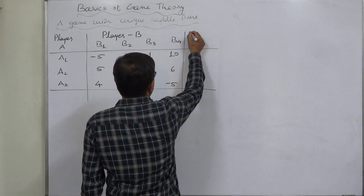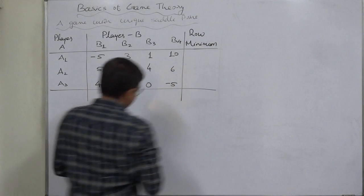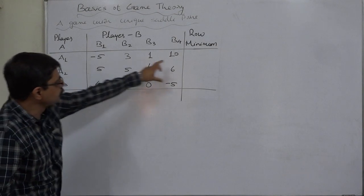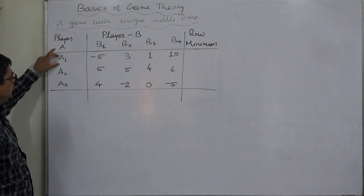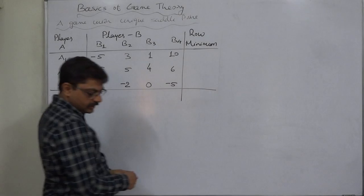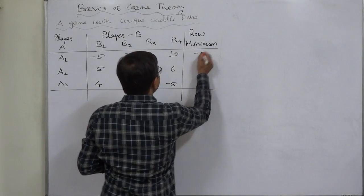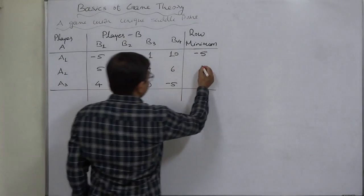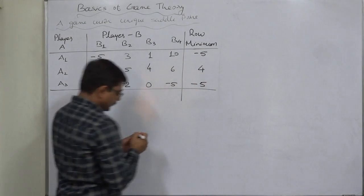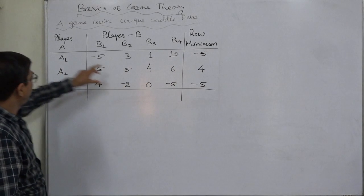First, prepare a column of row minimums. In this column we will write the minimum value from each row. That means if player A selects strategy A1, these are his payoffs, and out of which we select the minimum. In A1 the minimum is -5, in A2 the minimum is 4, and in A3 the minimum is -5.